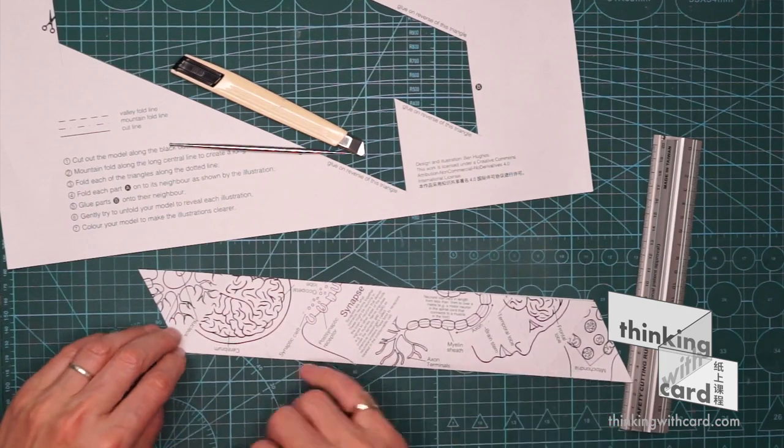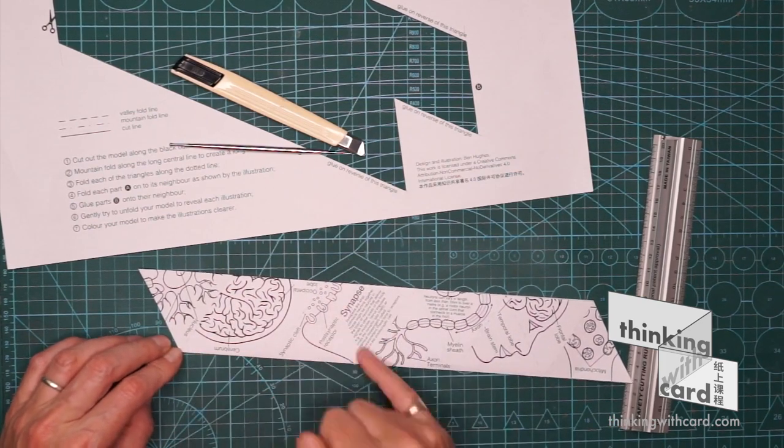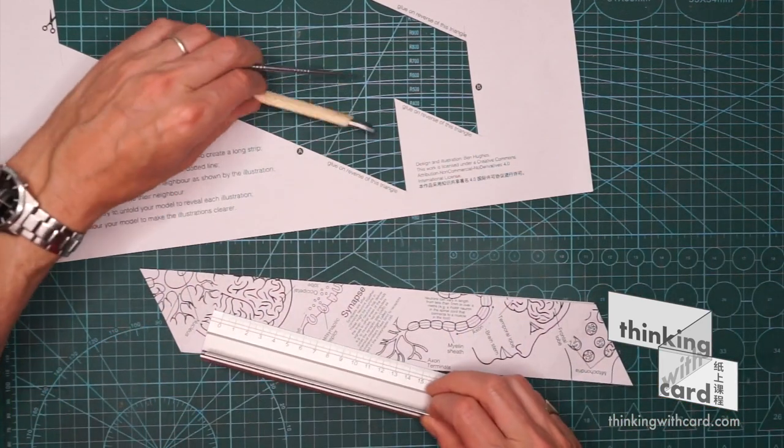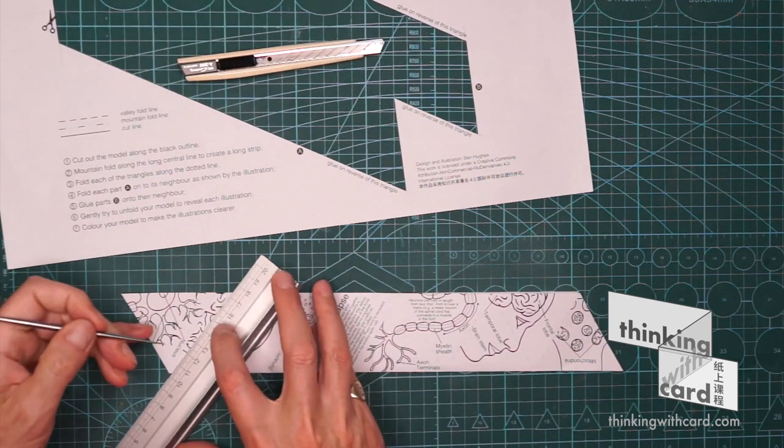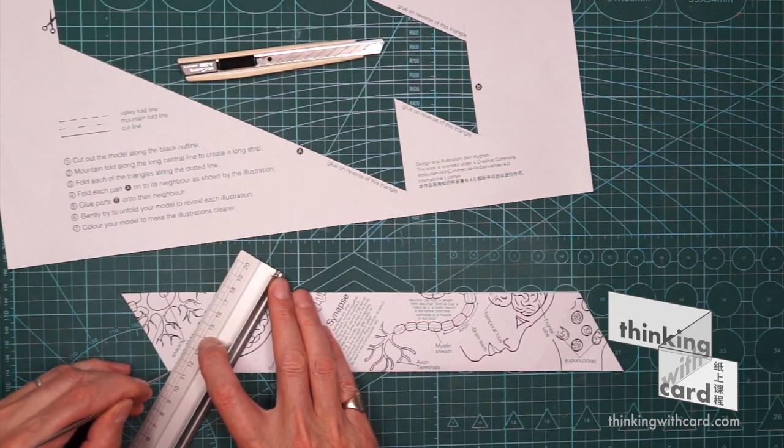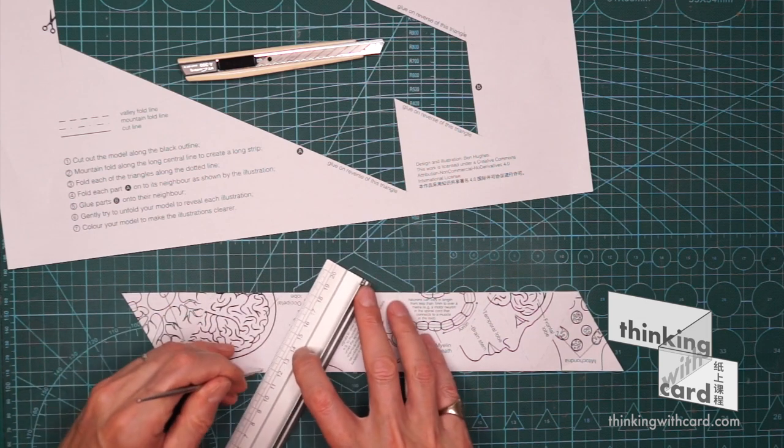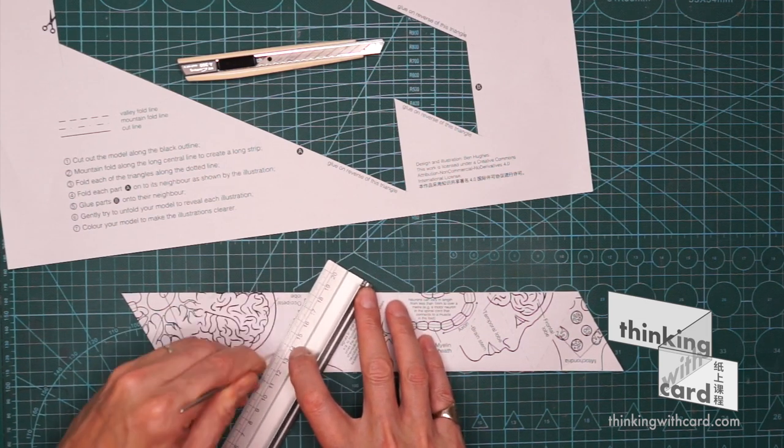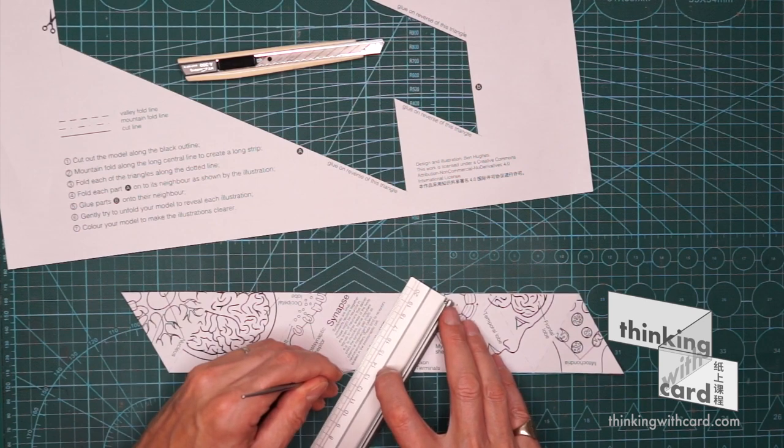And then the next fold are these lines here to make the triangles. So again, I'm going to use this folding tool just to help us locate each fold and weaken the fibres.